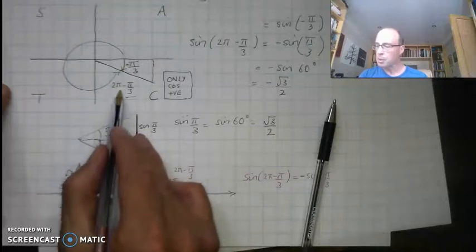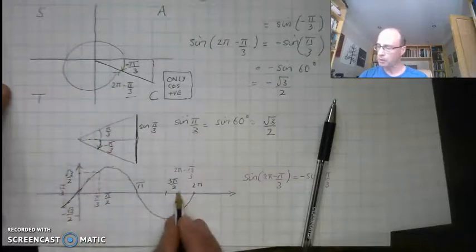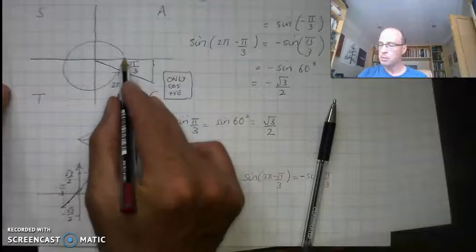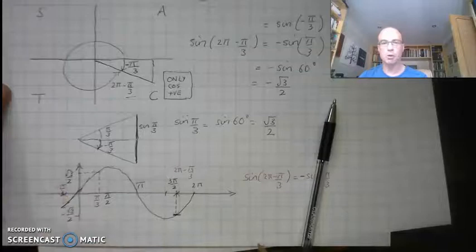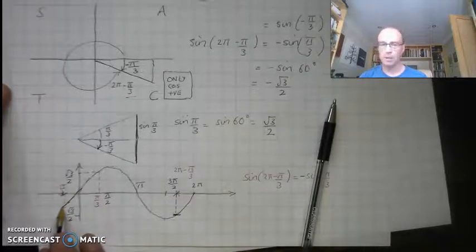So as I suspected, sine of 2π minus π/3, at this point here, is the same as minus π/3 at this point here. It's just one cycle behind. It's going to have the same value.